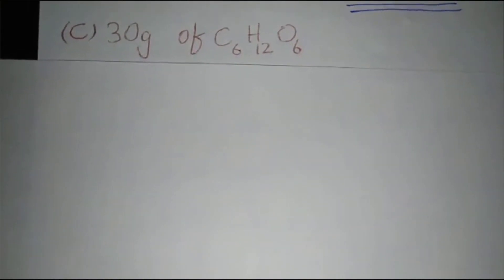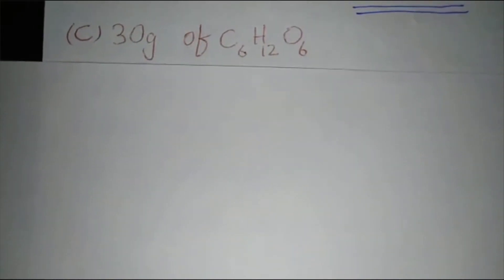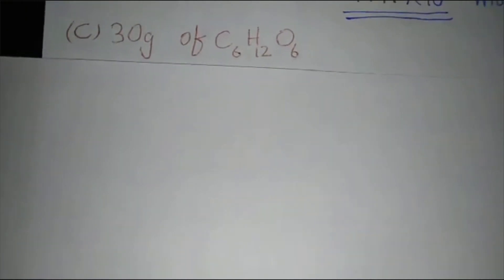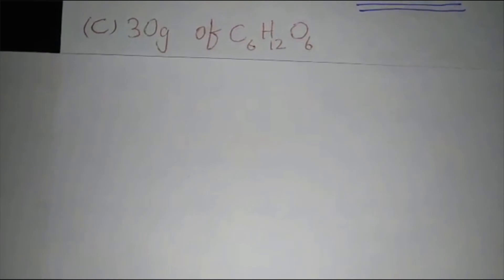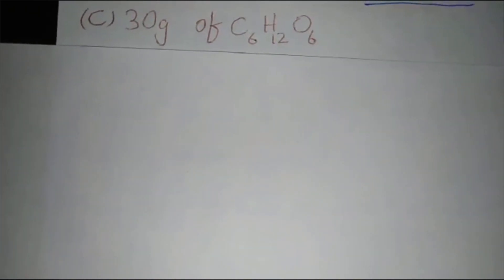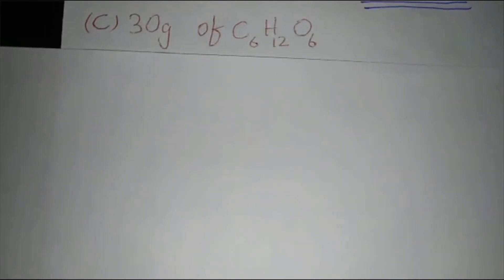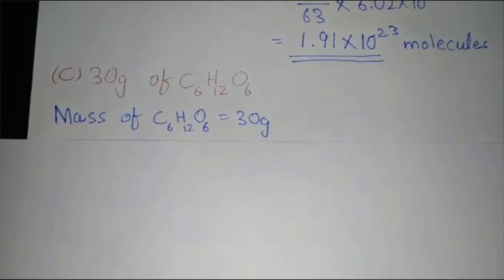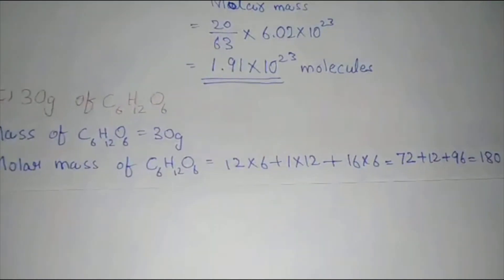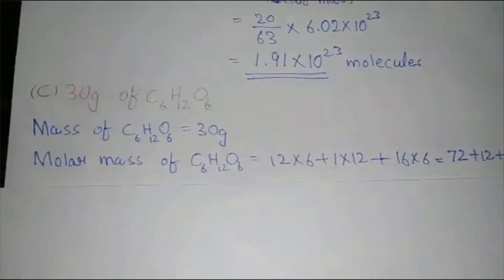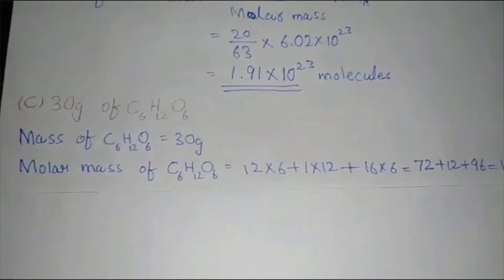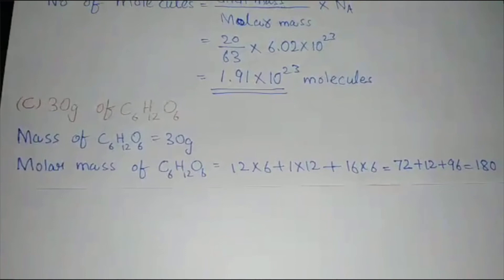This is the third part: 30 grams of glucose. The given data is mass of glucose equal to 30 grams. We will find the molar mass the same way as before. The molar mass of glucose is 180 grams per mole.